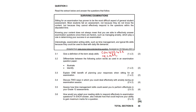Next, 3.2: differentiate between the following action words as used in the examination question paper — illustrate and identify. So when illustrating, you would give an example by clearly showing what you mean, clearly showing — a clear demonstration of what you mean. But identifying means just find something, mention it, name it.